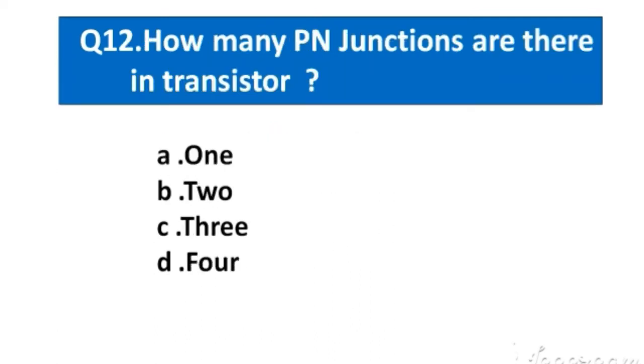Question number 12. How many PN junctions are there in transistor? Option A. 1. B. 2, C. 3, D. 4. The right answer option B. 2.